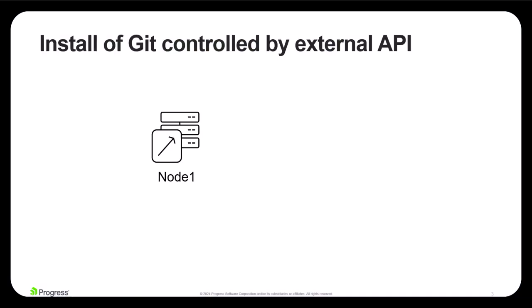In this example, there's just a single node in which we need to determine whether Git should be installed. This determination should be provided from the asset management solution, which controls the applications that are allowed or restricted.